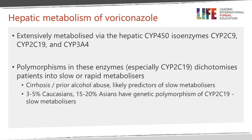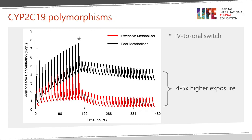Voriconazole is metabolized through CYP2C9, CYP2C19, and CYP3A4. CYP2C19 is an important genetic metabolizer — some patients are slow metabolizers and others are fast metabolizers. Patients with cirrhosis, excess alcohol use, or advanced age may also be slow metabolizers. 3 to 5% of Caucasians and 15 to 20% of Asians, particularly Northeast Asians from Korea, Japan, and China, have genetic polymorphisms of CYP2C19 and are slow metabolizers who may develop toxicity early. Modeling of drug levels in fast versus slow metabolizers shows a very large difference in exposure.